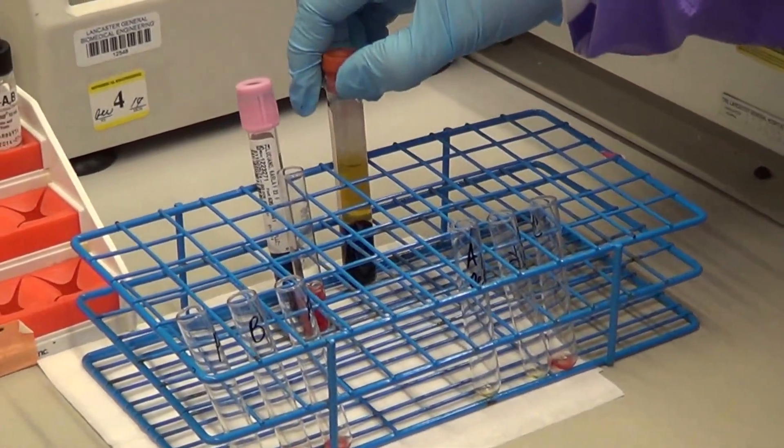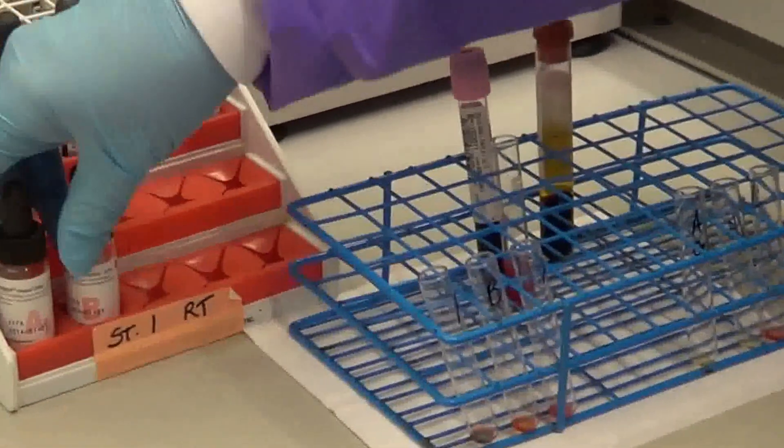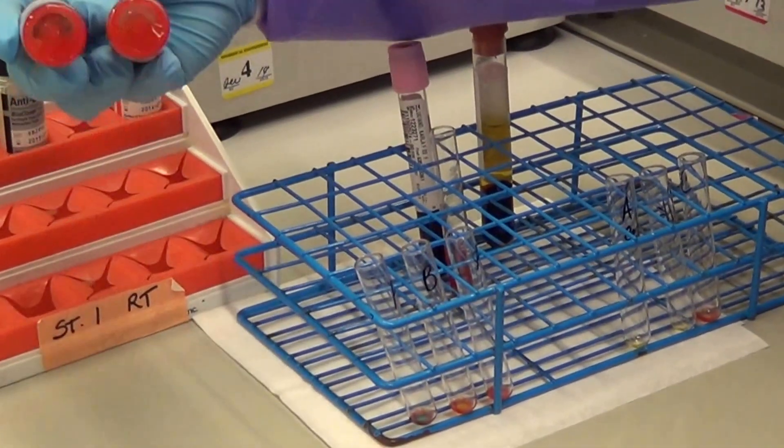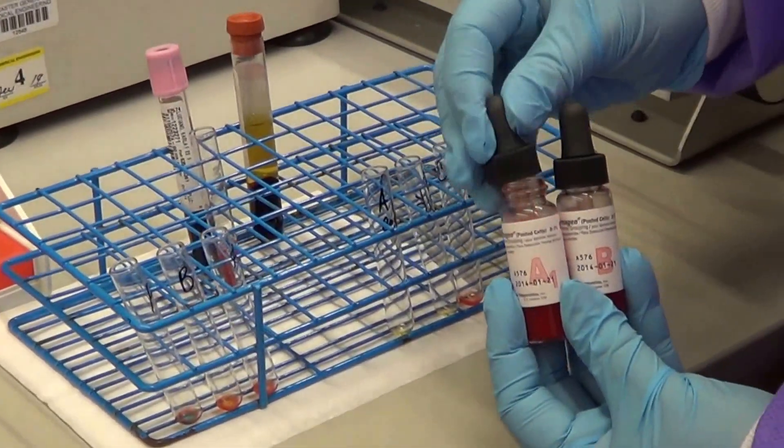You then add your reagent A and B cells. You add one drop of A1 cells, and then one drop of B cells.